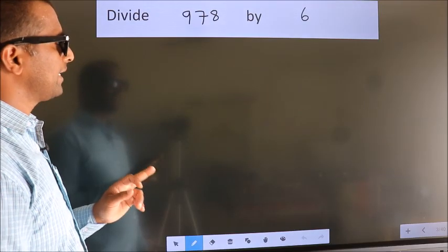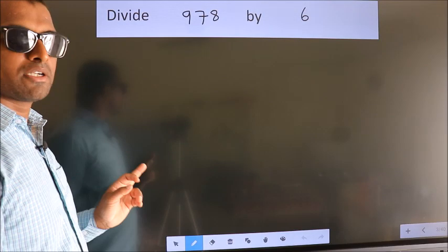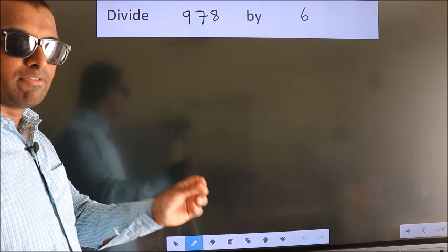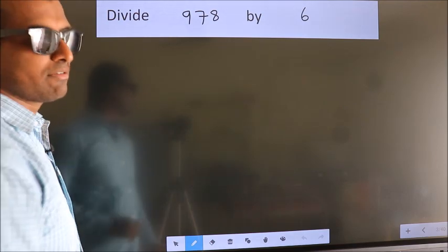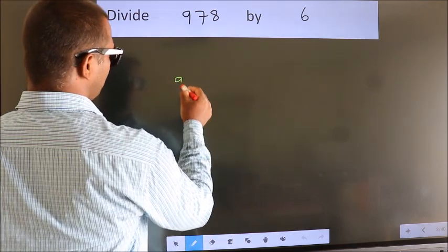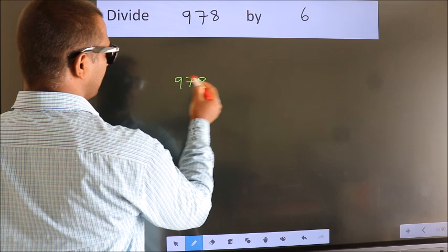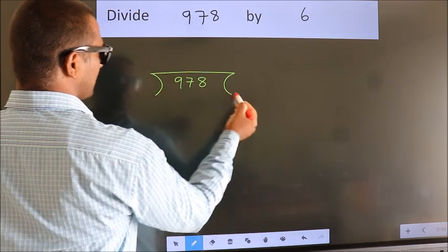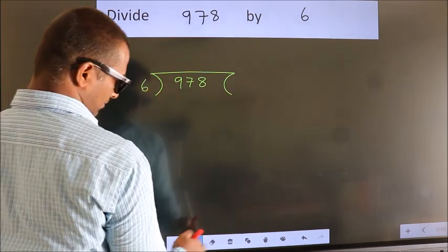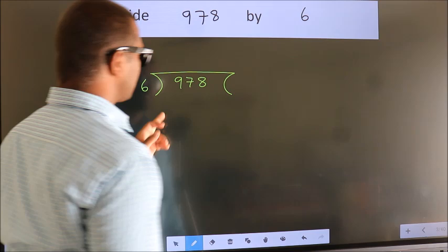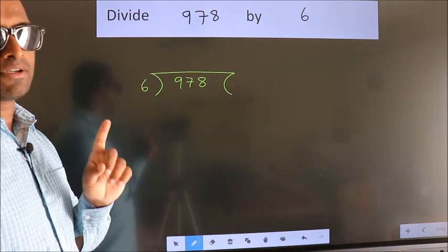Divide 978 by 6. To do this division, we should frame it in this way: 978 here, 6 here. This is your step 1.